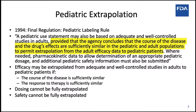Pediatric extrapolation, as it was first described back in 1994 by FDA, was the idea that if a disease was similar between a pediatric and adult population, and the drug being used to treat was expected to behave similarly between a pediatric and adult population, then there was the potential for leveraging the adult information to support the pediatric efficacy. At that time, pediatric extrapolation was basically limited to efficacy and dosing and safety could not be fully extrapolated.